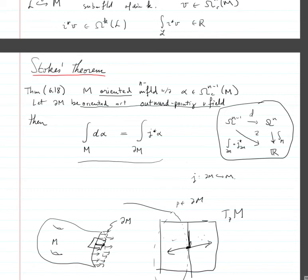Basically it's a local-to-global argument where in the local case the proof is the same as the proof from advanced calculus, valid in one of these open charts. Then we build that up to the whole manifold using the partition of unity. You should go through that yourself.